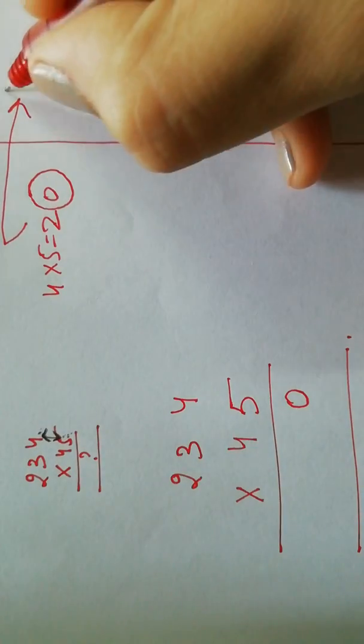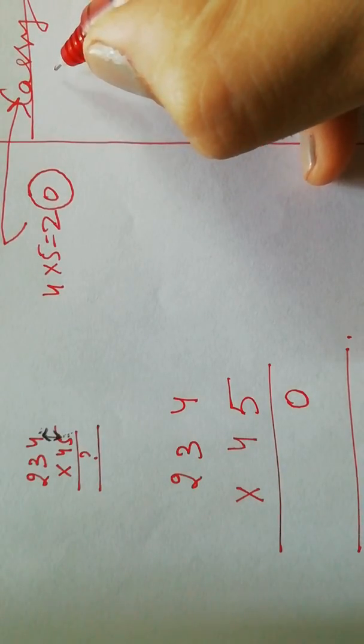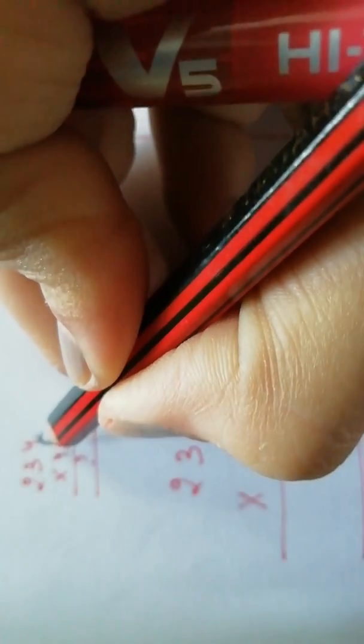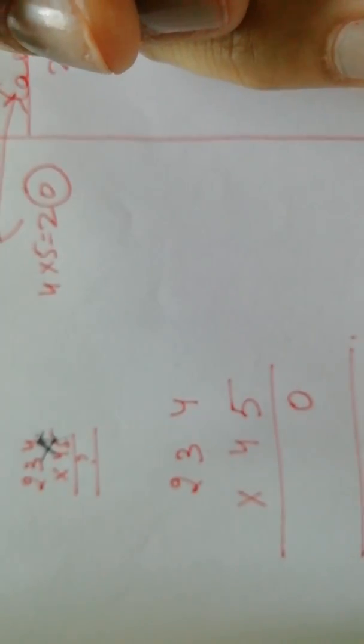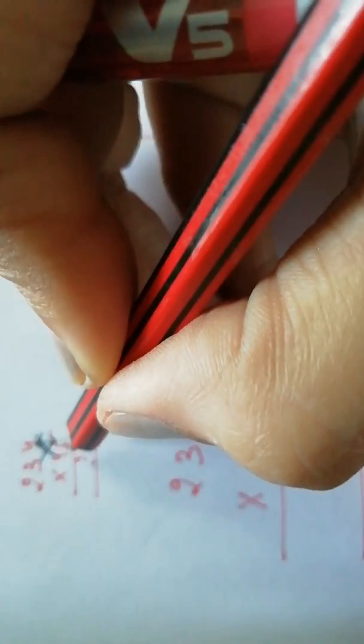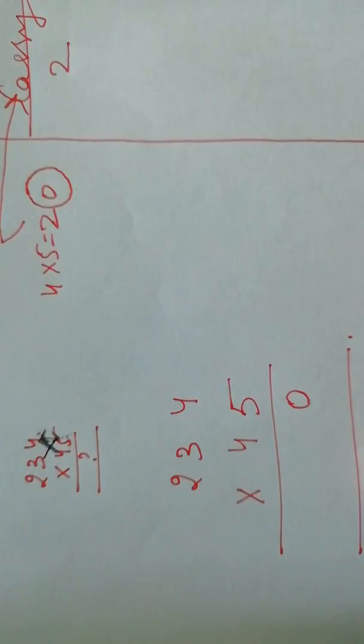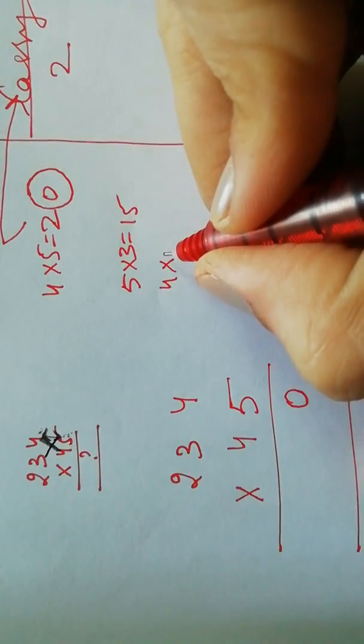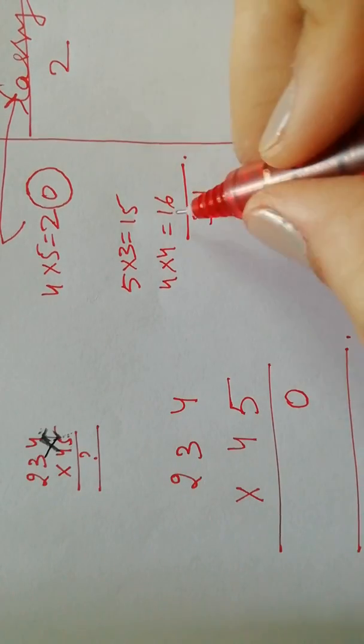Now next step is to multiply these two and these two and then add the result. So I'll multiply 5 and 3, and I'll add the result to the product of 4 and 4. So 5 and 3 will give me 15, and 4 and 4 will give me 16. So when I add the two I'll get 31.